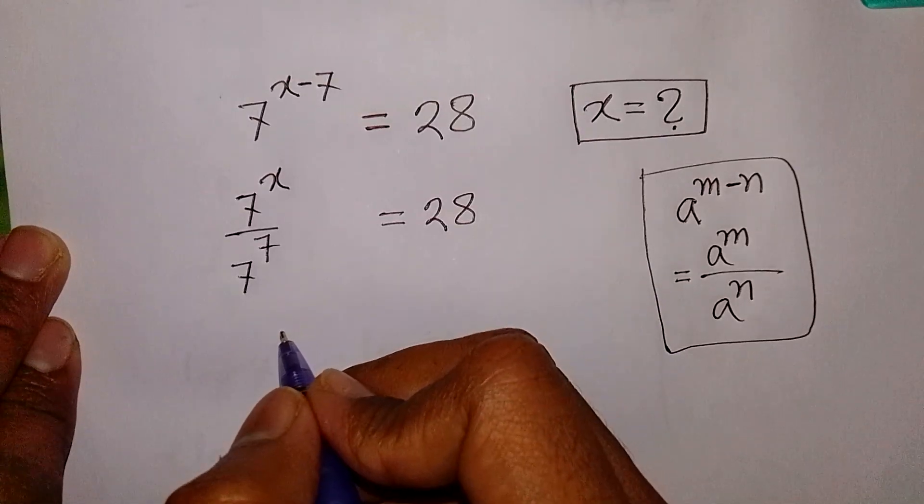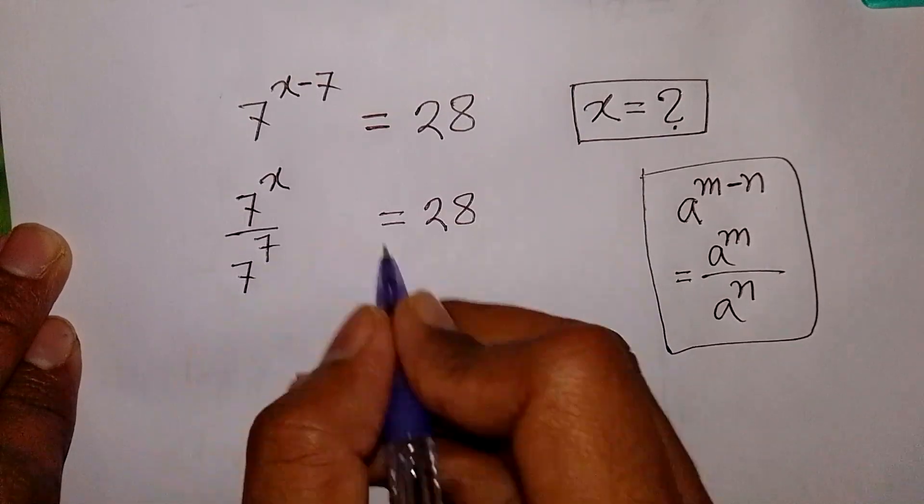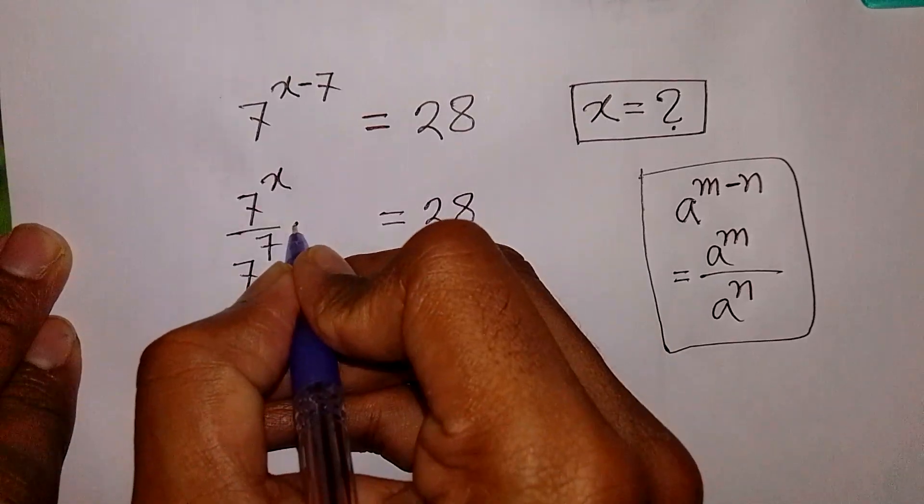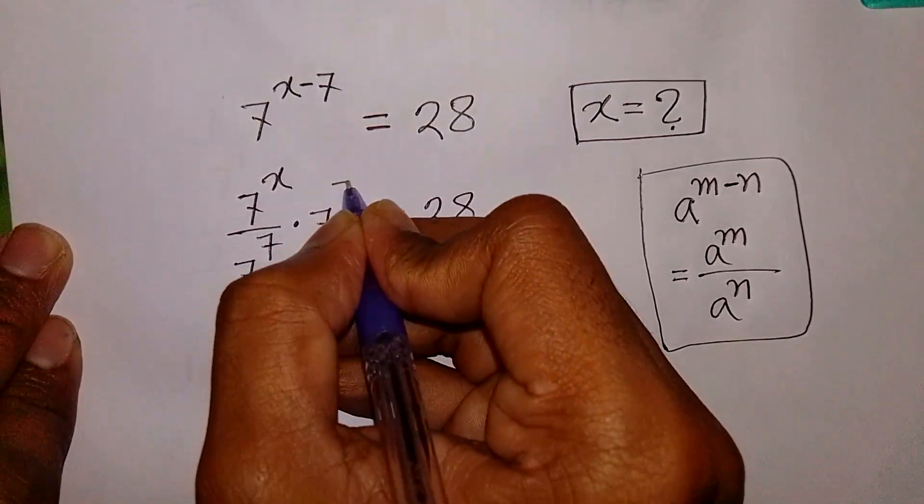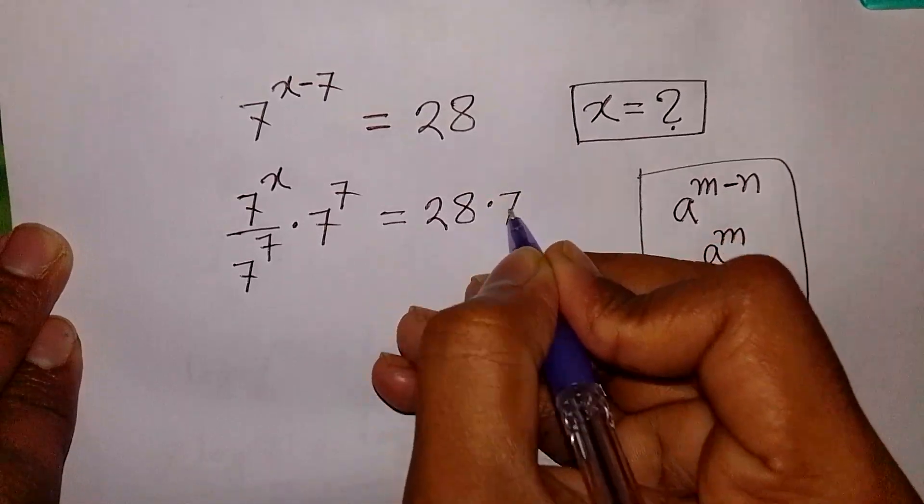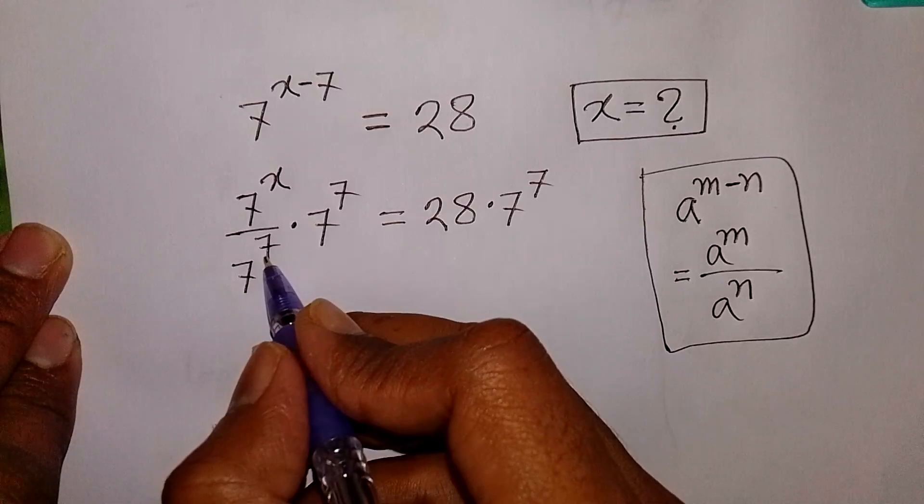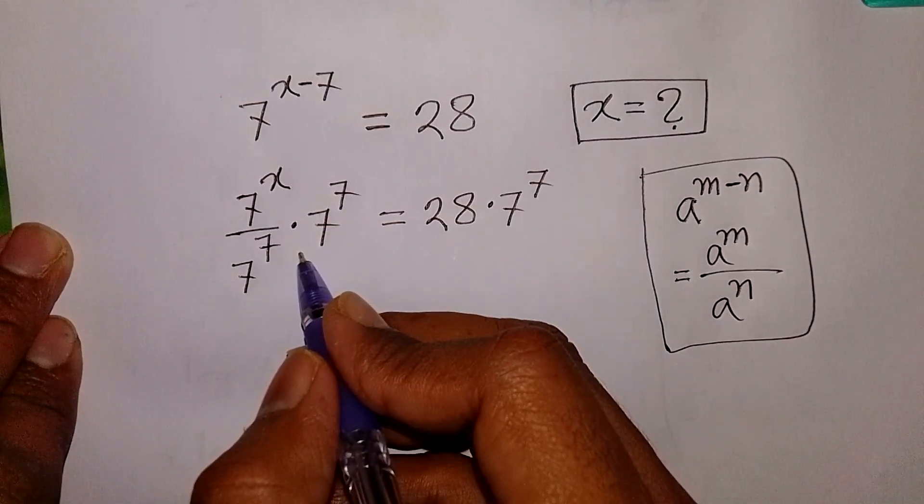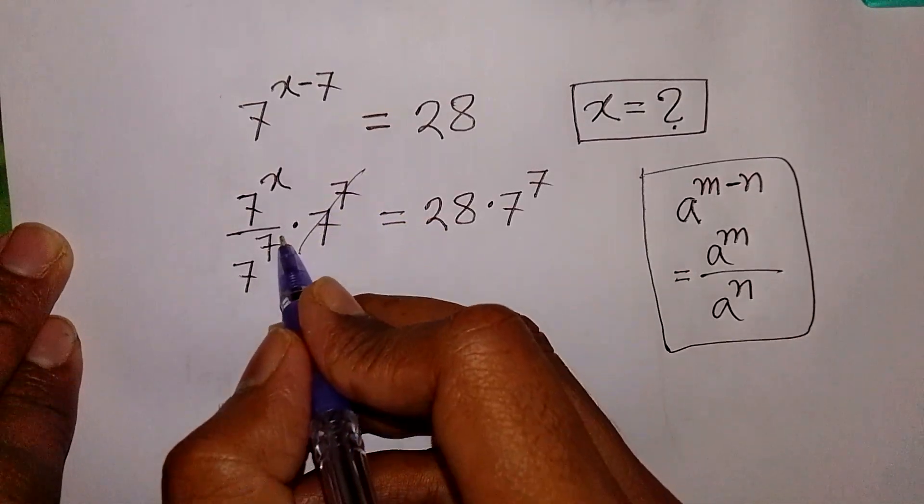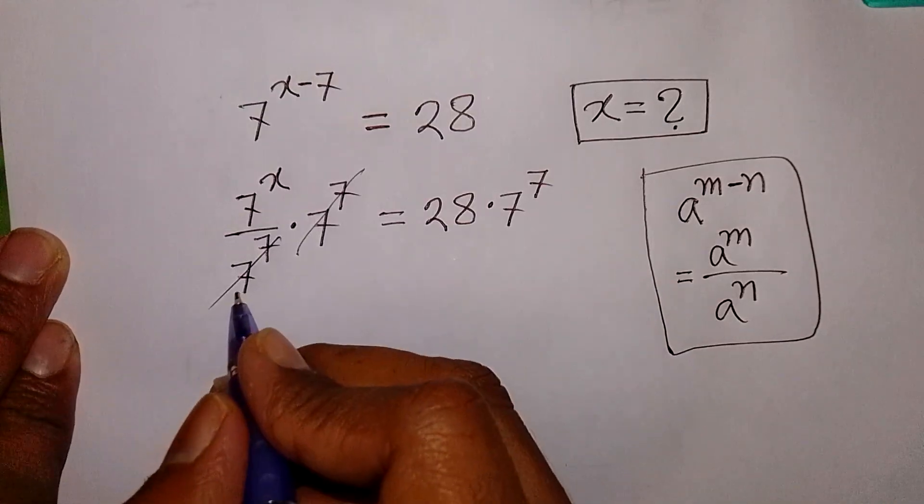Now, we have to multiply by 7 power 7 in both sides. So, multiply by 7 power 7. At this moment here, we see this 7 power 7, this 7 power 7 will be cancelled out.